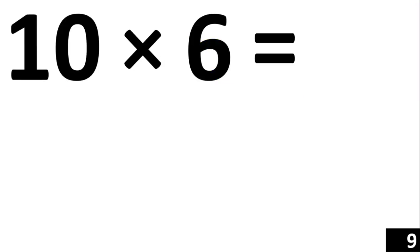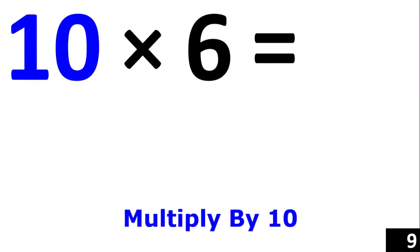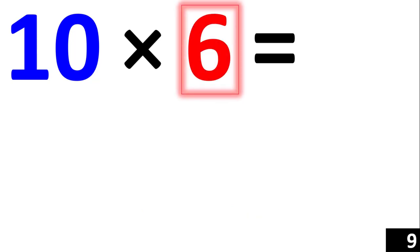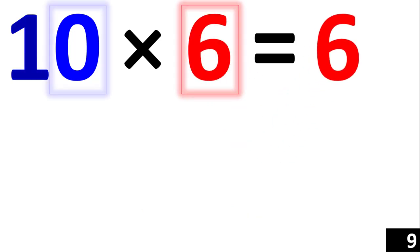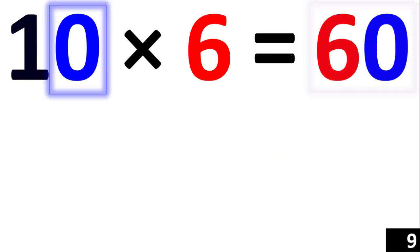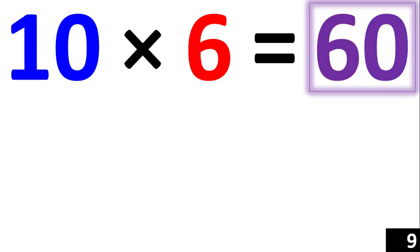For 10 times 6, we just use the rule of 10. 10 times 6 is a 6 with an added 0, so 60.